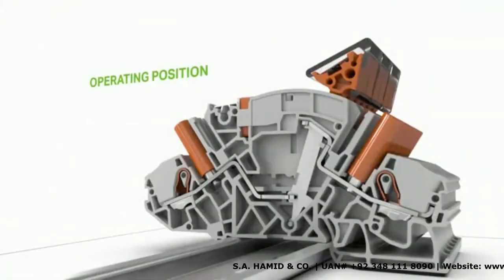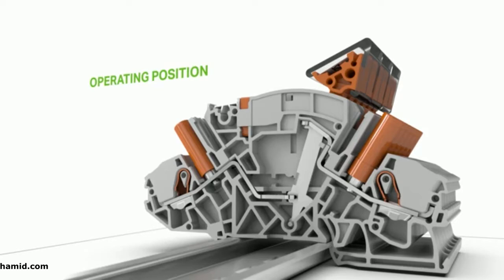In the operating position, the measurement device is connected to the current transformer. The circuit jumper is inserted.